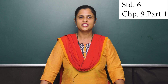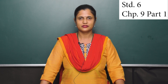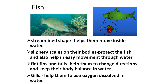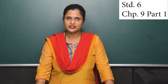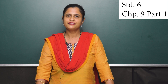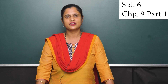Now let us understand why a fish is able to live inside water. Fishes have a streamlined shape — that means tapering at both ends and broad in the middle. Fishes also have slippery scales on their body, which protect the fish and also help them in easy movement through water. Fishes also have gills which help them use the oxygen dissolved in water. They have flat fins and tails which help them change directions and keep balance in water. So the features in the fish help it to live inside water, and the features present in camel help it to survive in a desert.